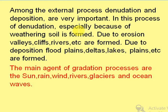Among the external processes, denudation and deposition are very important. In denudation, especially because of weathering, soil is formed. Due to erosion, valleys, cliffs, rivers, etc. are formed. Due to deposition, floodplains, deltas, lakes, plains, etc. are formed. The main agents of gradation processes are the sun, rain, wind, rivers, glaciers, and ocean waves. The external processes include the interaction of agents like weather, rivers, glaciers, wind, waves, and underground water.